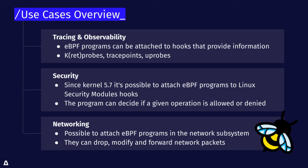We're listing K-probes, trace points, and U-probes — these are points where you can attach and are designed to be attached inside of the kernel. In the case of U-probes, it's actually in user space. You can also attach to sockets and syscalls. On the security basis, these attachment points are being expanded quite often. In kernel 5.7 we had the new possibility of attaching to Linux security modules, which allows eBPF programs to basically make decisions about whether an operation should be allowed or denied. Now this policy can be loaded directly into the kernel.